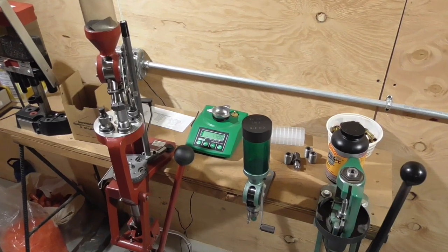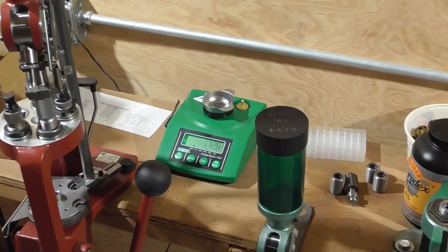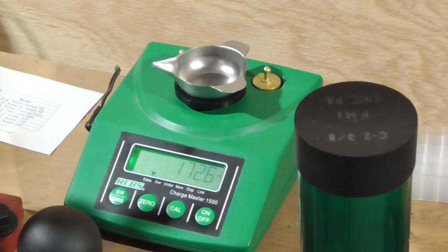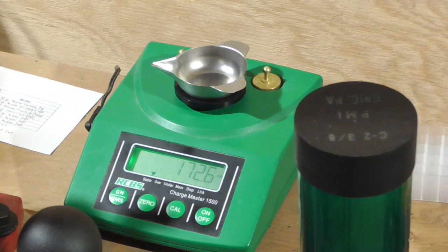Well I got my powder scale all put back together and it seems to be fully operational. In fact I know from past experience that that powder pan weighs exactly 172.6 grains empty, so I may not even need to recalibrate that scale after taking it apart and putting it back together.